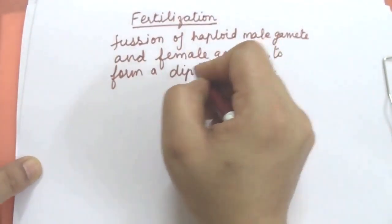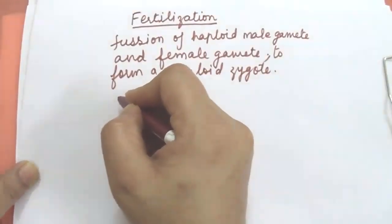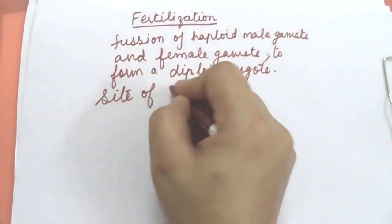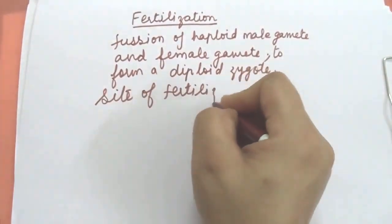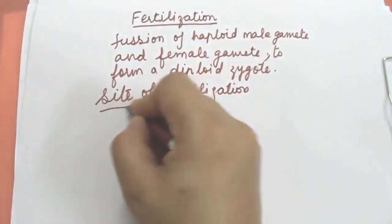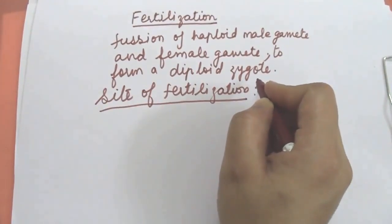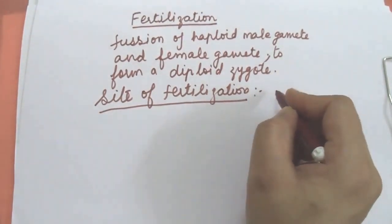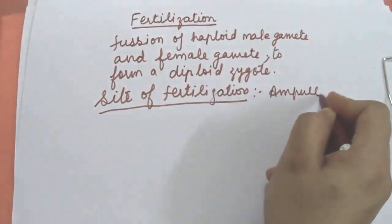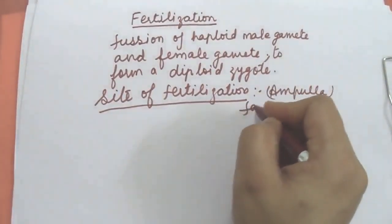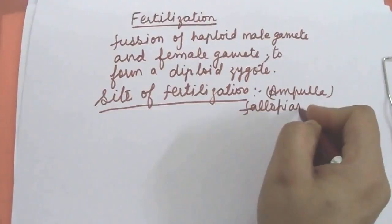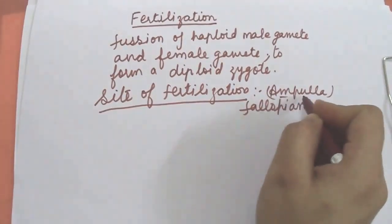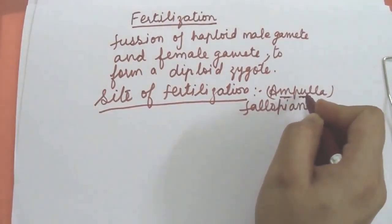Now, what is the site of fertilization? Students, where fertilization occur? Site of fertilization is, it is told in the last session also. I hope you all know. It is the fallopian tube, the ampulla region of fallopian tube. You all know, fallopian tubes have three parts: isthmus, ampulla. Ampulla is the second region. Here, the fertilization occurs.